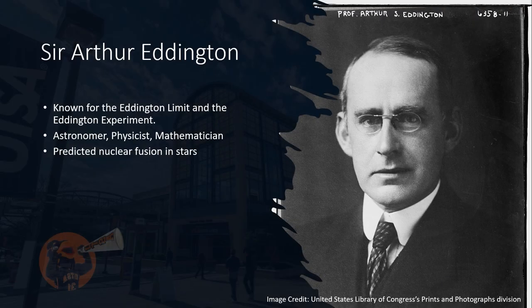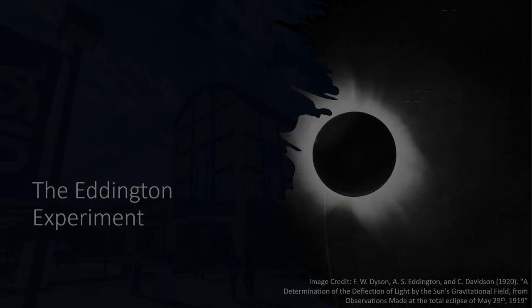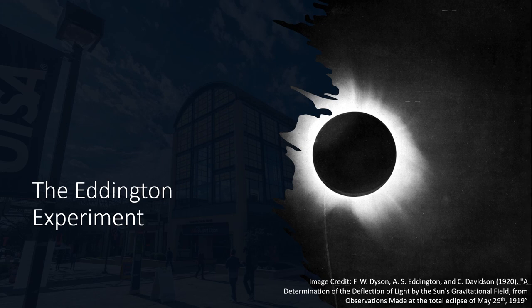Sir Arthur Eddington was an English astronomer, physicist, and mathematician who is known for the Eddington limit, the Eddington experiment, and predicting nuclear fusion in stars. The Eddington limit determines the intrinsic upper limit of a star's brightness. The Eddington experiment set out to prove one of Einstein's ideas within general relativity.